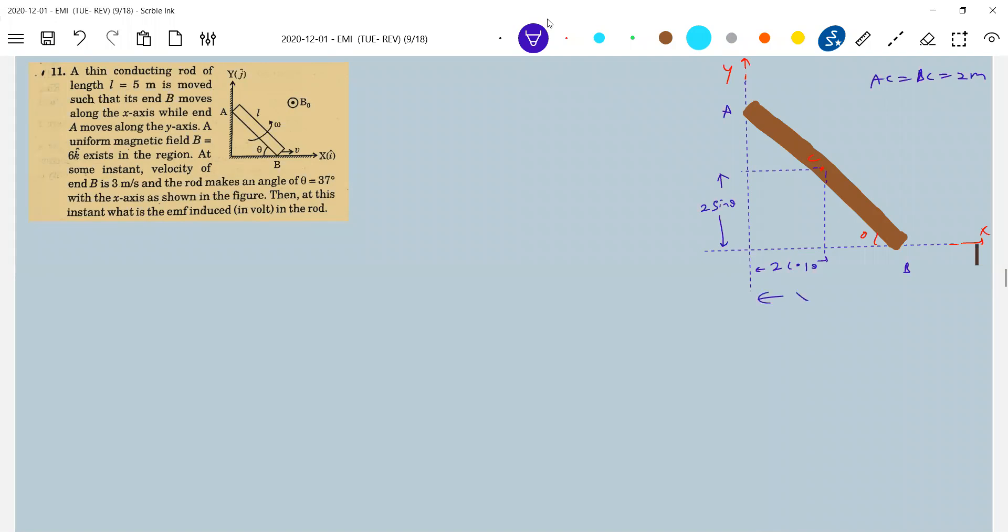Let this be x. So what is dx by dt? This rod is moving with a velocity. So this v is equal to dx by dt. We know it is how much?